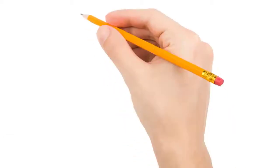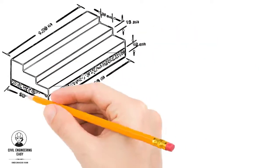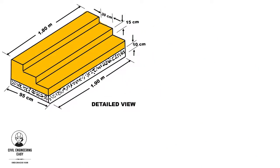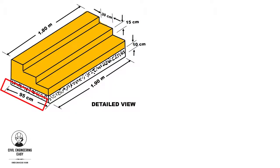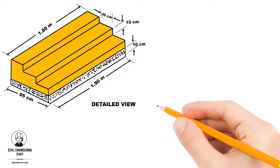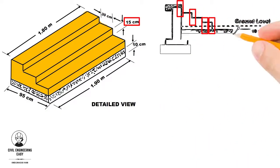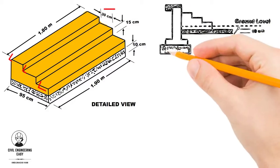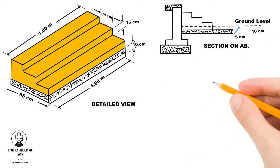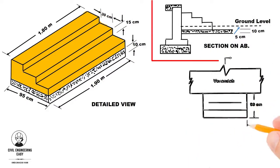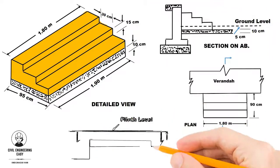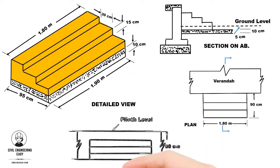The detail view of the step is shown. There is 1.9 meter length, 95 centimeter width, and 0.1 meter thick cement concrete laid in the foundation. There are four risers having a height of 15 centimeter and three treads in the given step. The plan, section A-B, and elevation of the step is shown in the figure.